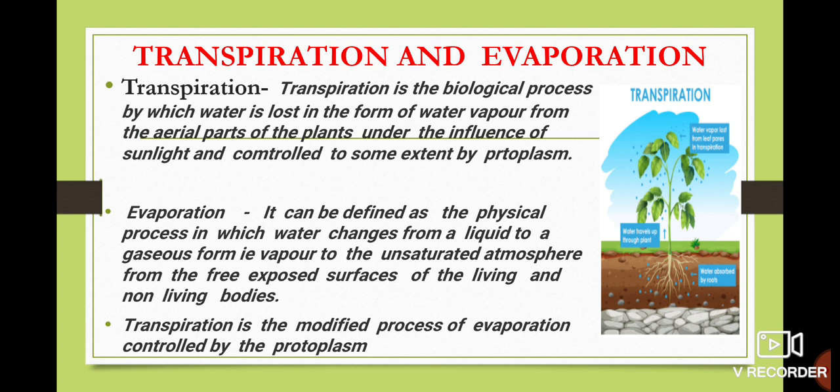Now you need to know the modified form of the definition. Transpiration is a biological process — it's called biological because it takes place in biological specimens — by which water is lost in the form of water vapor from the aerial parts of the plant. These aerial parts include stomatal sites and other regions that come in contact with air, and the process needs to be controlled by certain agents, most importantly sunlight.